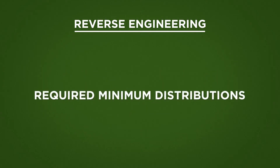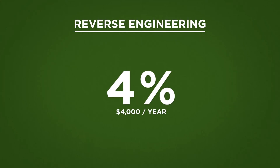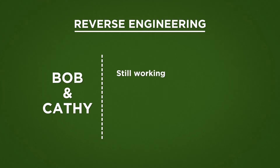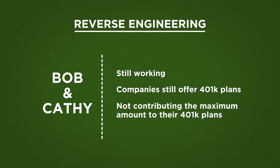Those are called required minimum distributions, right? That's right. And for Bob, it'll be about 4%, which is $4,000 a year. We understand what Bob's options are under the tax law, but we need a little bit more information from Bob and Kathy. We found out that Bob and Kathy are both still working, and both of their companies offer 401k plans. And we know that they're also not contributing the maximum that they could to those 401k plans.